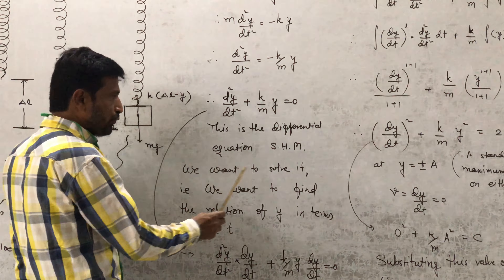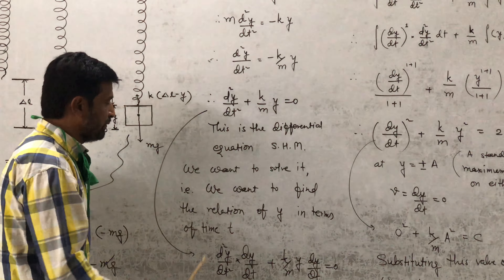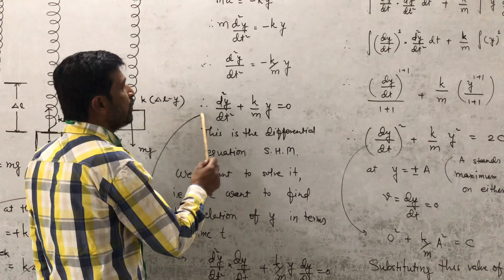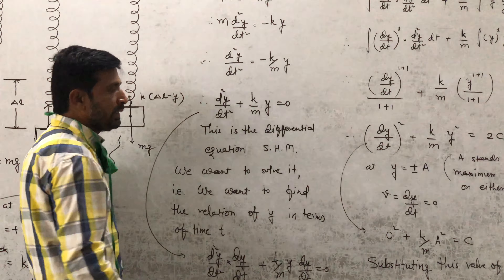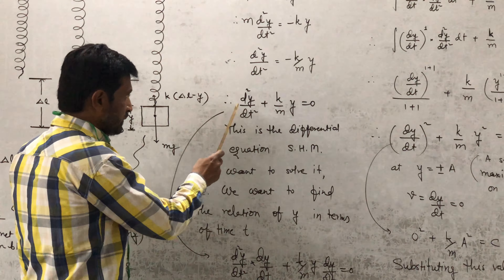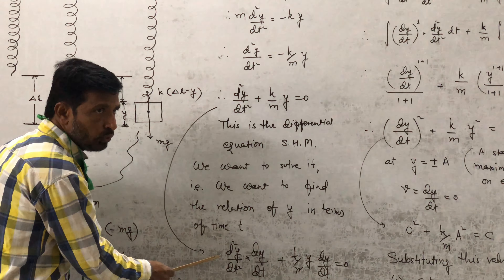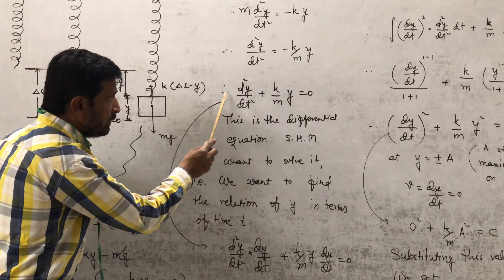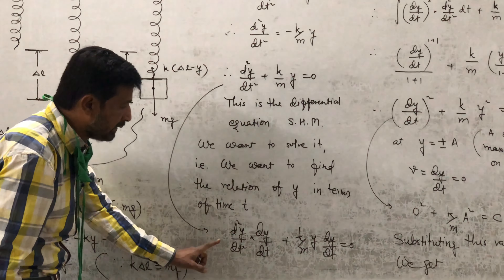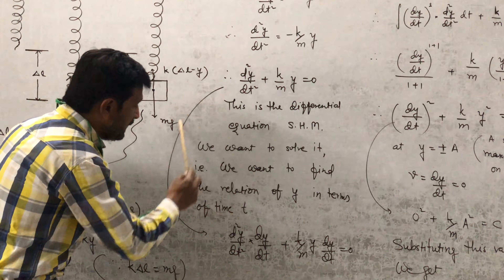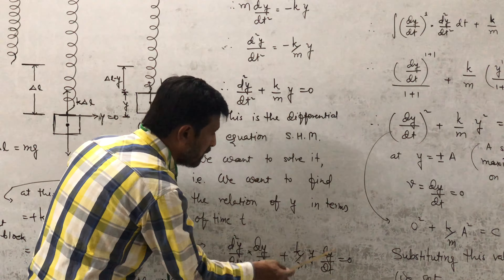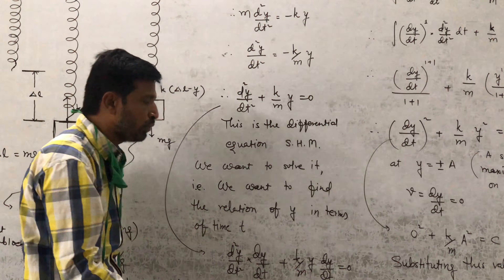Now we want to solve this differential equation, that is, we want to find the relation of y in terms of time t. For this we are applying a trick: multiplying both sides of the equation by dy/dt. So: (d²y/dt²)·(dy/dt) + (k/m)·y·(dy/dt) = 0.